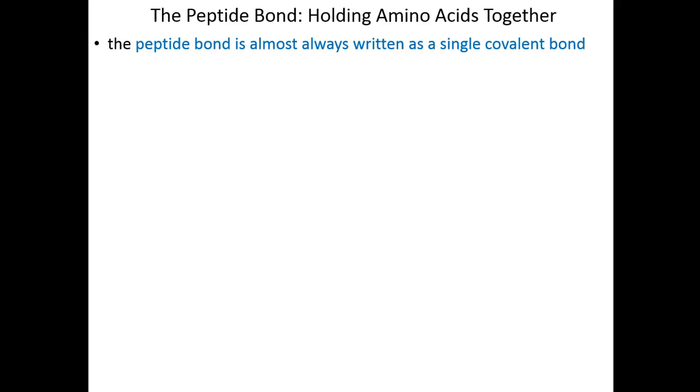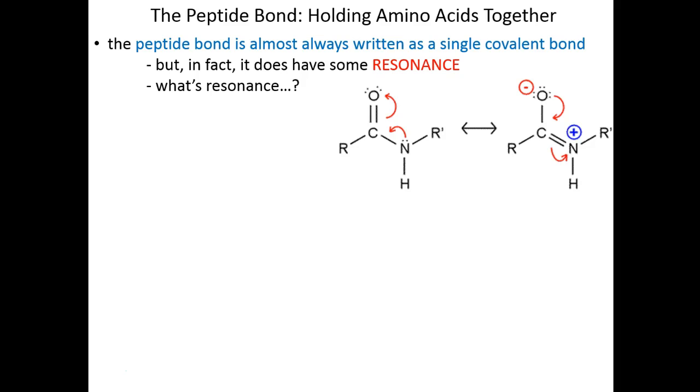The peptide bond is always written as a single covalent bond, but in fact it exhibits resonance. Resonance occurs whenever you have a double bond neighboring another bond which has the potential to be a double bond as well.